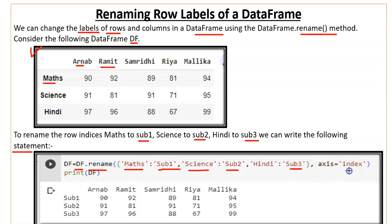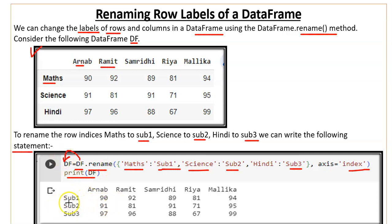You also set axis equal to 'index'. This defines which axis should have its labels changed — 'index' means row indexes. The result is then saved in a variable and printed. After the rename, the row labels have changed to Sub1, Sub2, and Sub3.